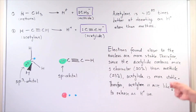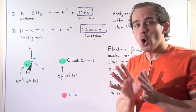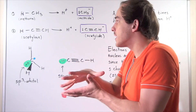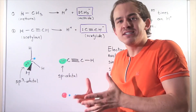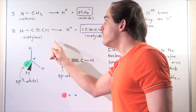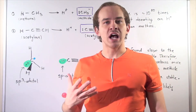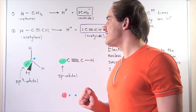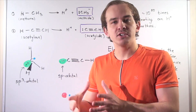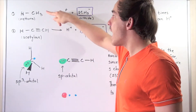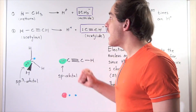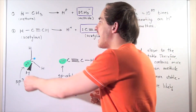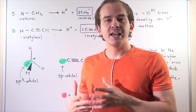Therefore, acetylene is more likely to release an H⁺ ion than methane. Note that in this lecture we've compared acetylene to methane, so acetylene is a relatively good acid. If we compare acetylene to a very strong acid such as hydrochloric acid or hydrobromic acid, it becomes a very weak acid by comparison. But when comparing hydrocarbons, alkynes are better H⁺ donors than alkanes, and likewise, alkynes are also better at donating an H⁺ ion than alkenes.